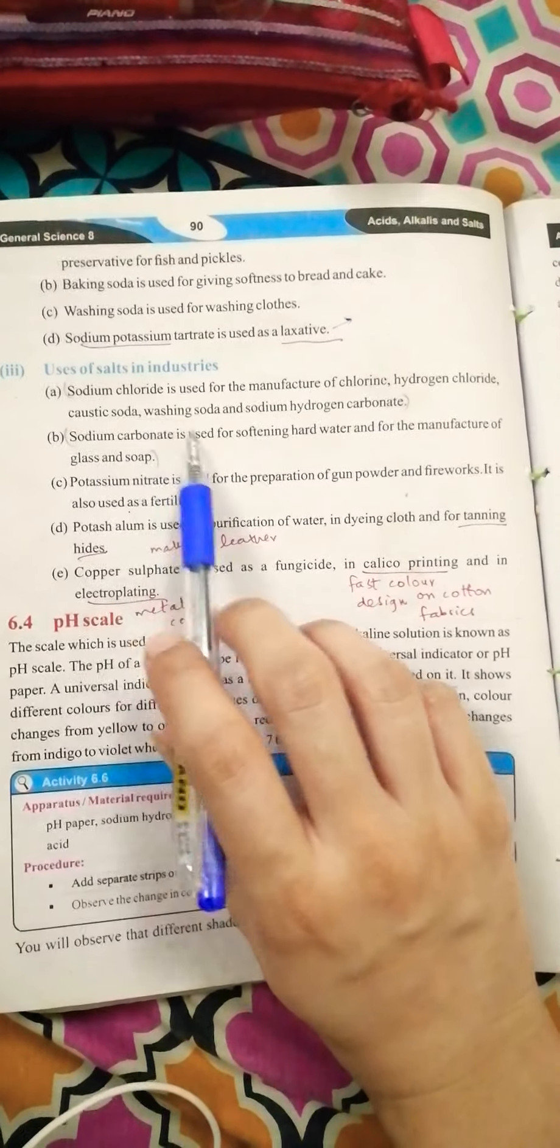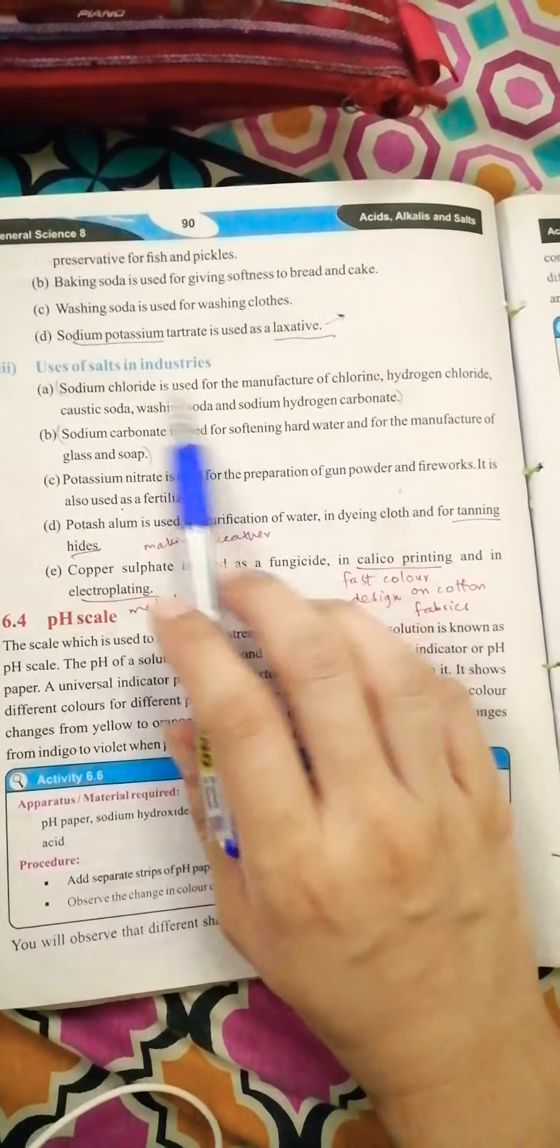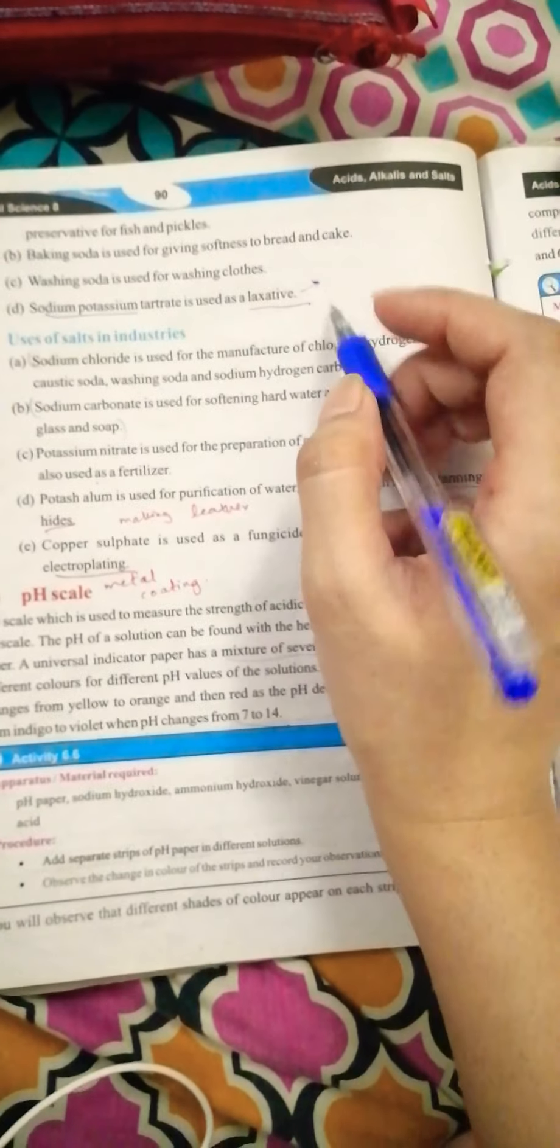Uses of salts in industries. In the industries, sodium chloride is used for manufacture of chlorine, hydrogen, caustic soda, washing soda, sodium hydrogen carbonate. Sodium chloride is used in many things.